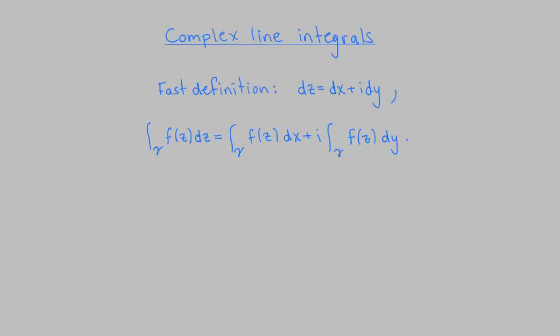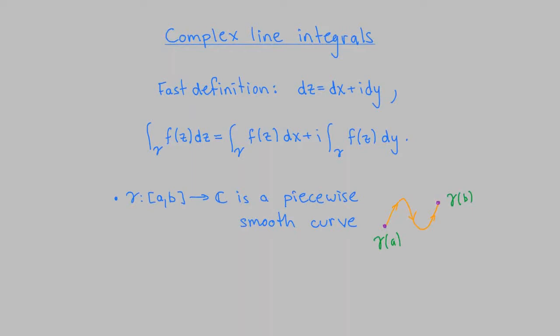Let's begin with the definition of the complex line integral. The fast definition, which is all you're going to need to remember after you've done enough examples, is this. The complex differential dz is defined to be dx plus i dy. The integral over gamma of f(z) dz is then given by the integral over gamma of f(z) dx plus i times the integral over gamma of f(z) dy. Here gamma is a piecewise smooth, oriented curve in the complex plane, and f is a continuous complex-valued function on gamma.